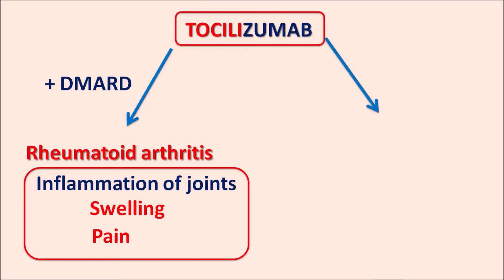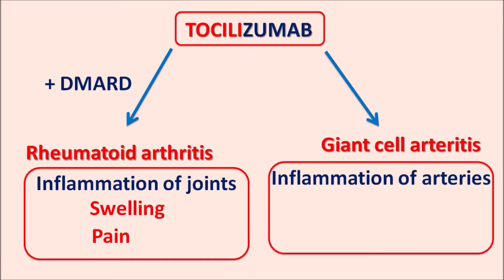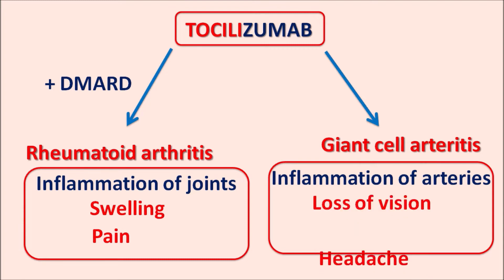Another indication of this drug is in the treatment of giant cell arthritis. This is the inflammation of the lining of arteries, particularly those supplying the head, resulting in loss of vision, headache, and difficulty in movements of the jaw. This inflammatory response is again controlled by tocilizumab, where it reduces the immune response.